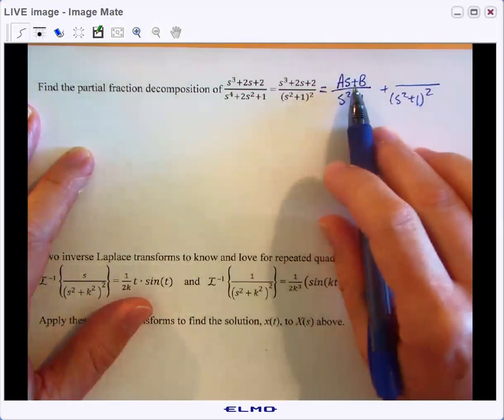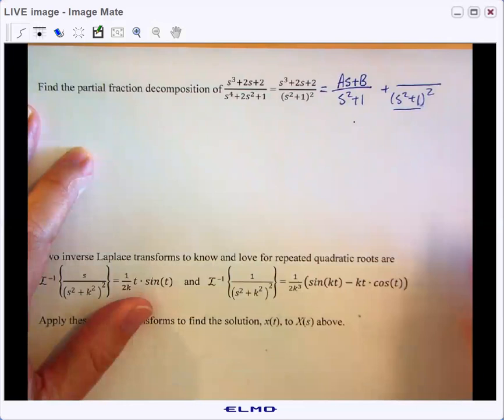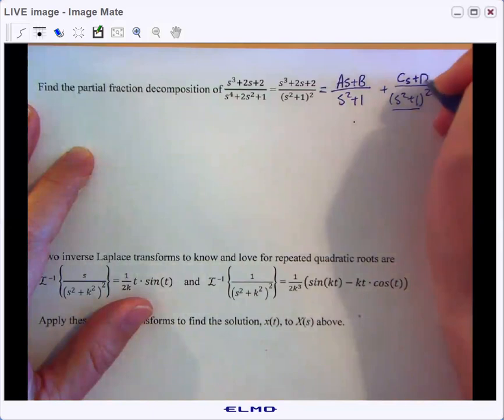some of that would be able to be absorbed into this term right here. So we really only need to focus on what the factor himself is, S squared plus one. And so we need a linear factor up top, CS plus D.